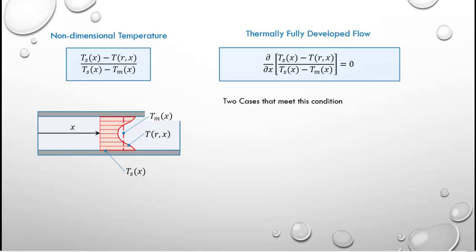There are two cases that meet this condition. The first case is where the heating of the tube is controlled by a uniform surface heat flux, in other words Q_s double prime is a constant.